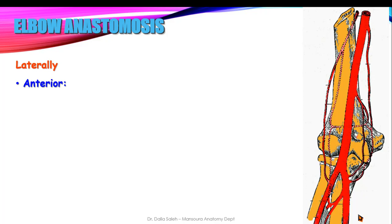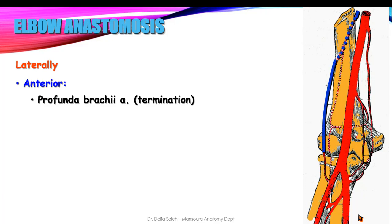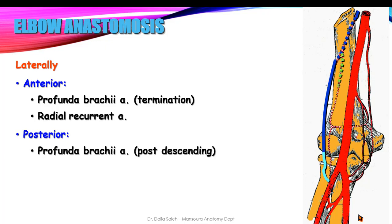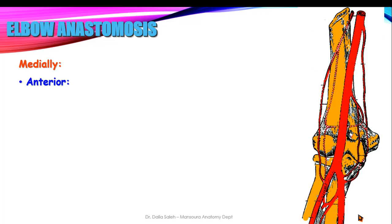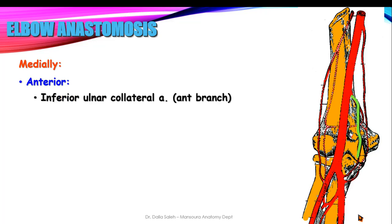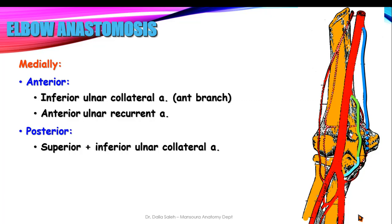Laterally and anterior to the lateral epicondyle, a branch from the profunda brachii anastomoses with the radial recurrent artery. Posterior to the lateral epicondyle, the middle collateral artery from the profunda brachii meets the interosseous recurrent artery. Medially and in front of the medial epicondyle, the anterior branch of the inferior ulnar collateral artery anastomoses with the anterior ulnar recurrent artery. Posterior to the medial epicondyle, the superior ulnar collateral artery and the posterior branch of the inferior ulnar collateral artery anastomose with the posterior ulnar recurrent artery.